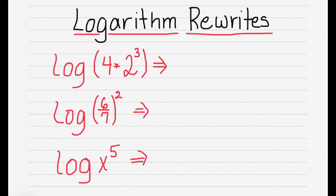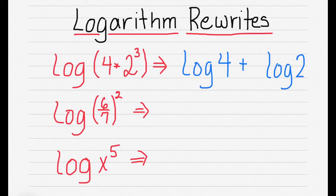So let's take a look at a couple of logarithm rewrites. So log(4 × 2³), we're going to apply the product rule. So we're going to be adding. So we're going to have log 4, and then we're going to add log 2. And then we're also going to have to apply the power rule, where we can multiply 3.